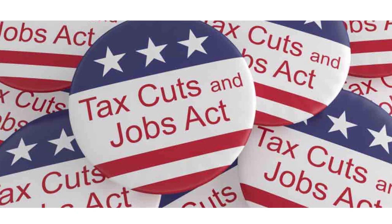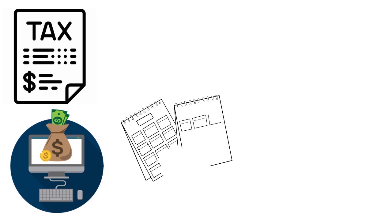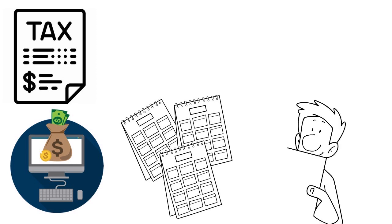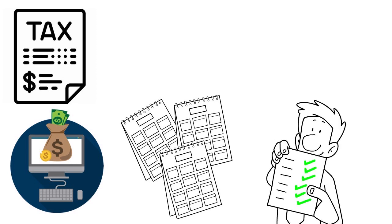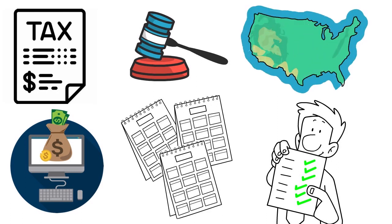Losses originating in tax years beginning January 1st, 2018 are still subject to the former tax rules, and any remaining losses will expire after 20 years. The TCJA affected NOL carry forwards by removing the previously allowed two-year carryback provision for tax years 2018 and later, except for certain farming losses. Even for farming, you have to meet specific criteria. Depending on your industry and your state, you may need to adjust based on your sector.